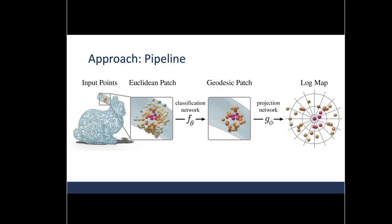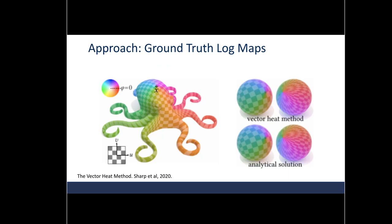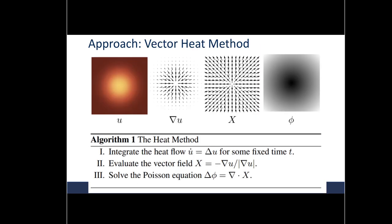Here's the next step in learning DSE's after geodesic patch extraction. A neural network with a similar folding net architecture learns to predict log maps from geodesic patches. You might ask, where did the ground truth log maps come from? Basically, the vector heat method was used to compute pseudo ground truth log maps. And for more information, please see the vector heat method paper. And here's some more information about the vector heat method and how it works, which I won't cover.